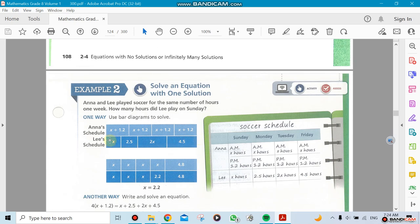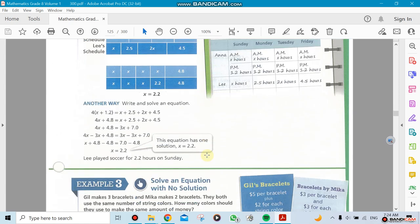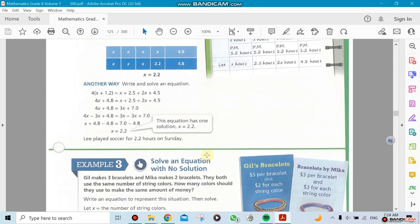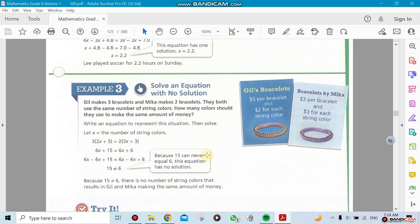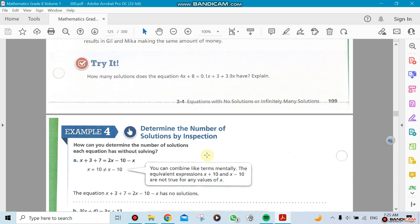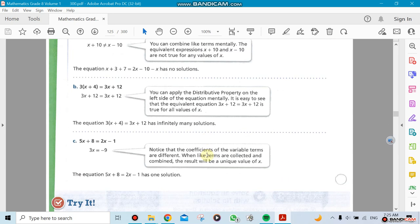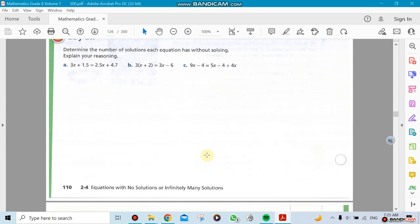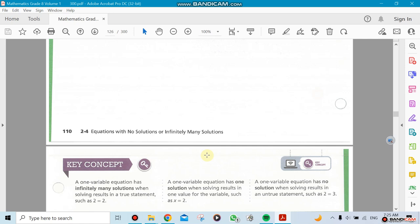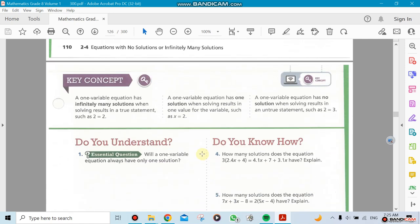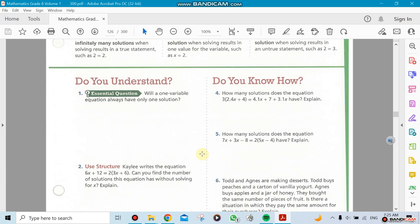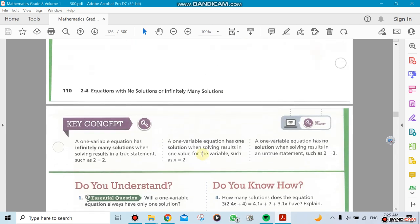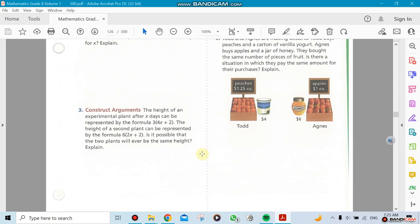That's why it's infinitely many solutions. Now, no solution - that's when you have different numbers on both sides, which is not acceptable. You cannot have 1 equals 5. If you have 1 equal to 5, that means no solution, so whatever value you put for x, you're not gonna get any solution at the end.